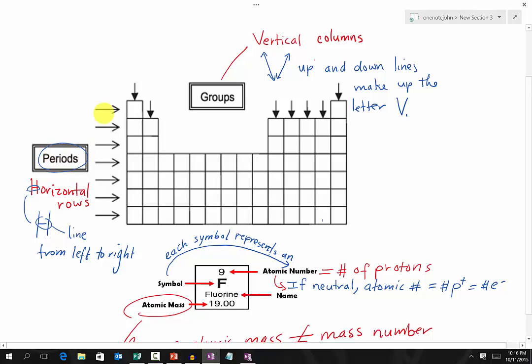Now the Periods are basically the horizontal rows on the Periodic Table going across. So we have the first Period, Period 1, Period 2, 3, 4, and so on.